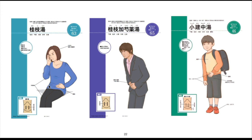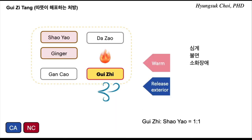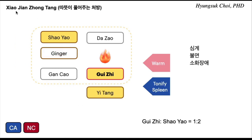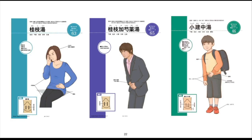Gui-ji-tang is different — gui-ji and xiao-yao ratio is one to one, so this is for perspiration. Gui-ji-jia-xiao-yao-tang has a ratio of one to two. And xiao-jian-jong-tang adds only yi-tang — sugar. Sugar is the only difference, and it makes this kind of functional difference.